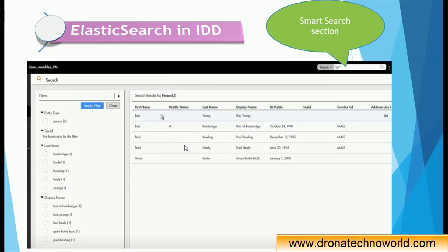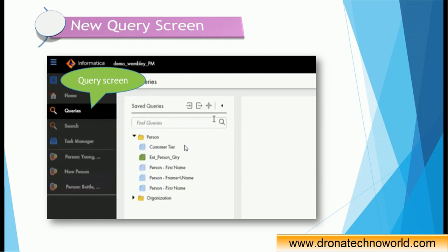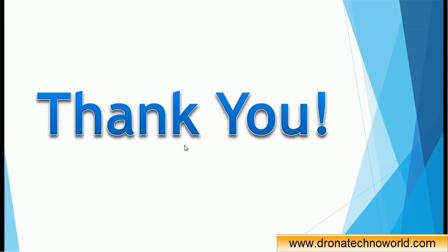To see Elasticsearch in action: if you are using Entity 360, on the right-hand side there is a search box where you select the business entity — in this case, 'Person' — and you can search anything. Searching with an asterisk returns results using the smart search, which is very powerful. Once you open a record you can see additional sections, sorting functionality, filter functionality, and more. You can also do a query search, but smart search is different from query search. In advanced search, a match score is also returned.